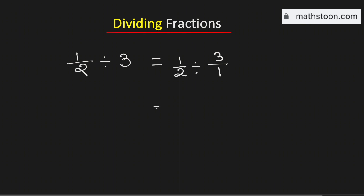In the next step we will convert this division as multiplication. For that we need to flip the top and the bottom. This means we need to write 1 over 3 here.